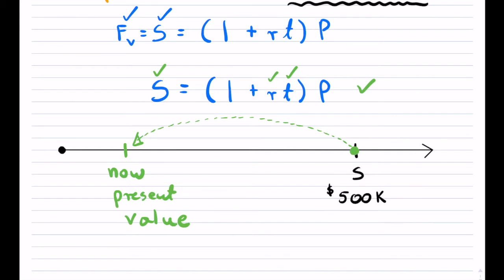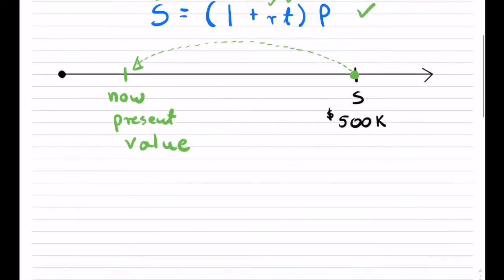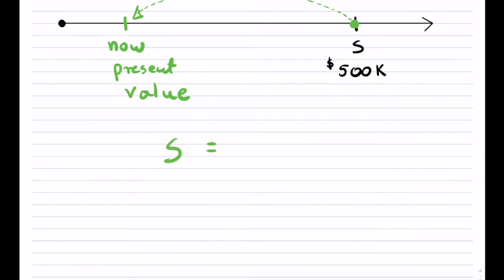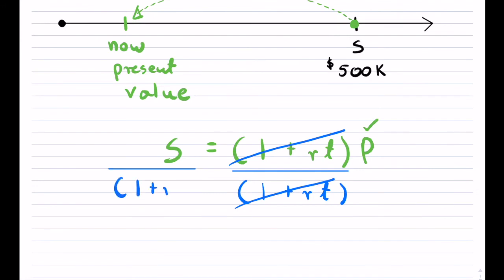Now, we do want to be able to have kind of a standard formula instead of just plugging in and solving. And in order to do that is if you take this formula of the future value, S is equal to 1 plus RT times P. So your present value, which is this right here, if you wanted to solve for this and get a formula out of this, you have to use a little bit of algebra. And that algebra means I do not want to have this 1 plus RT on this side. So I'm going to divide both sides. So this thing will cancel here. But of course, we have to do that on the opposite side as well. So this will be 1 plus RT.